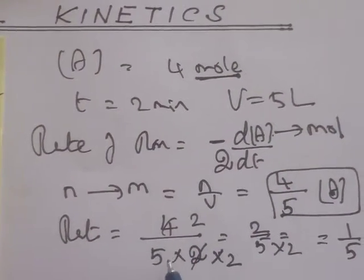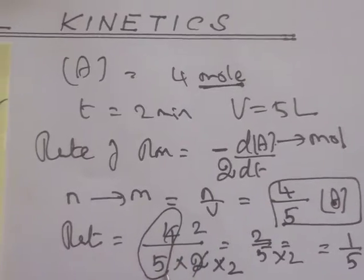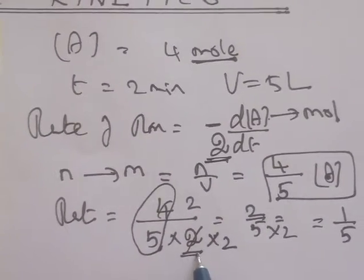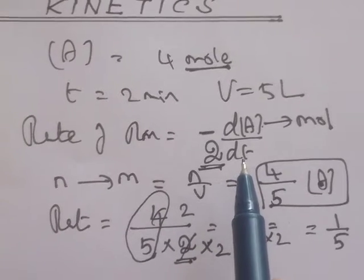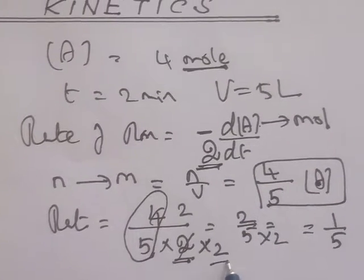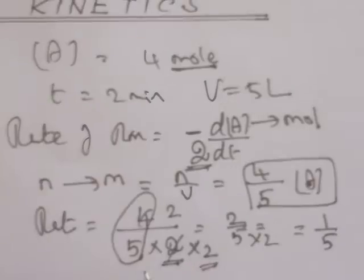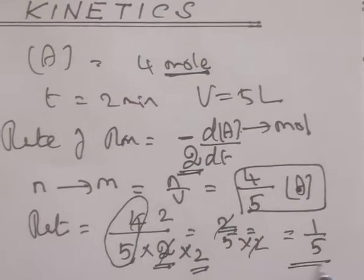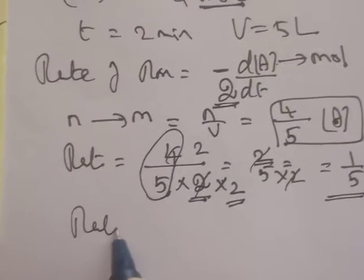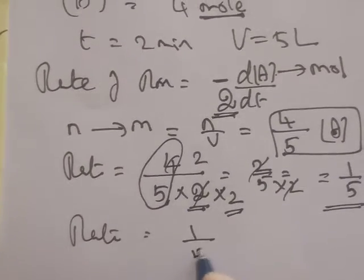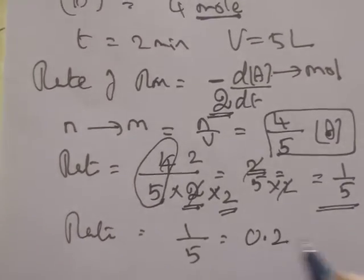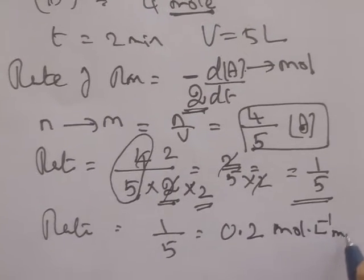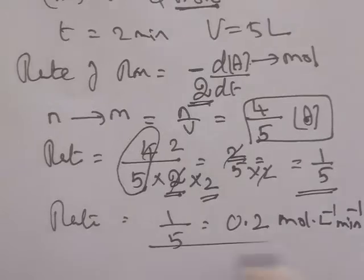The concentration is 4 by 5. Now the stoichiometry is 2 and the change in time is 2 minutes. For the simplification, the 2 and 2 get cancelled and the answer is 1 by 5. So the rate of reaction is 1 by 5, which is equal to 0.2, with units mol per liter per minute because time is in minutes.